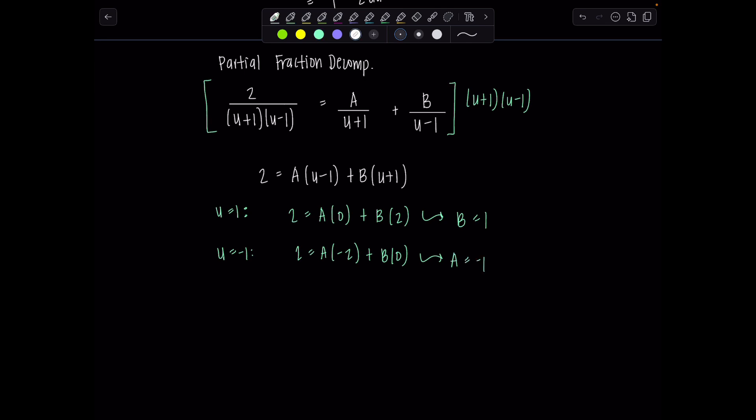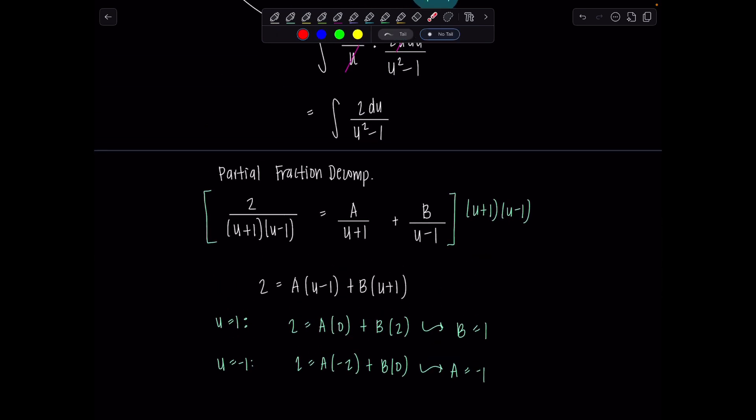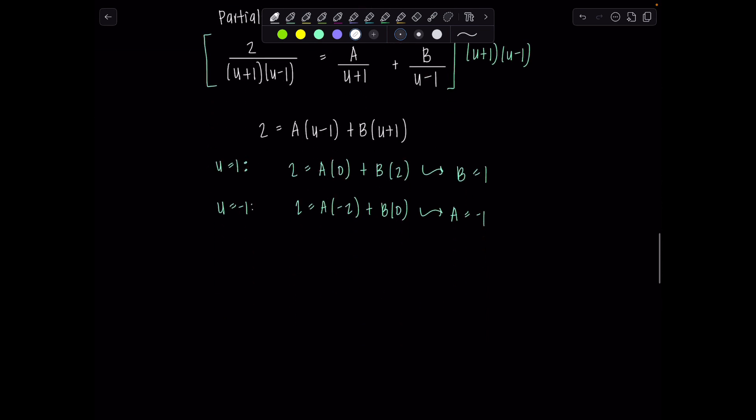Okay, so now we can rewrite our integral. Since a is negative, you guys, I'm going to actually put it second, so it looks nicer. So the integral now becomes 1 over u minus 1 minus 1 over u plus 1 du.